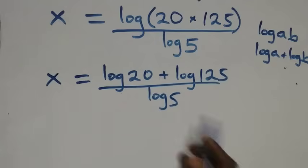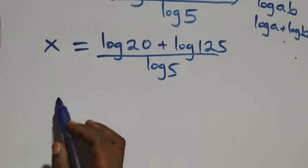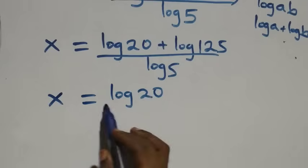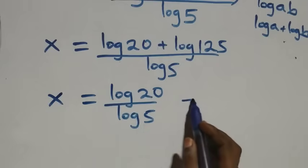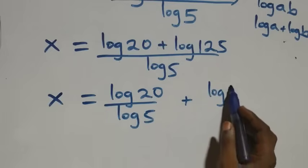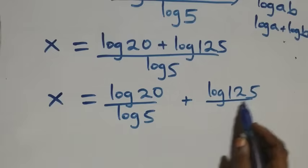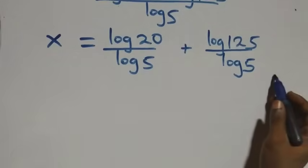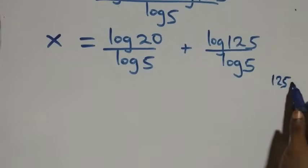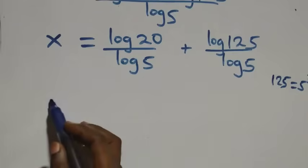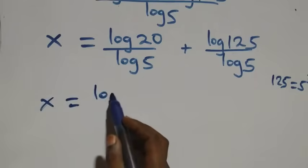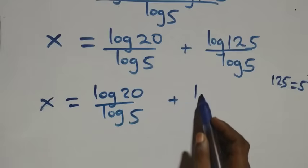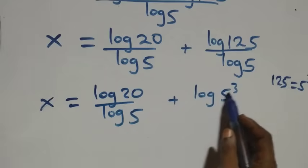We separate this into two fractions, so x equals to log twenty over log five, plus log one hundred and twenty-five over log five. Now, one hundred and twenty-five is the same thing as five times five times five, which is five raised to the power three. So what we have becomes x equals to log twenty over log five, plus log five raised to the power three over log five.